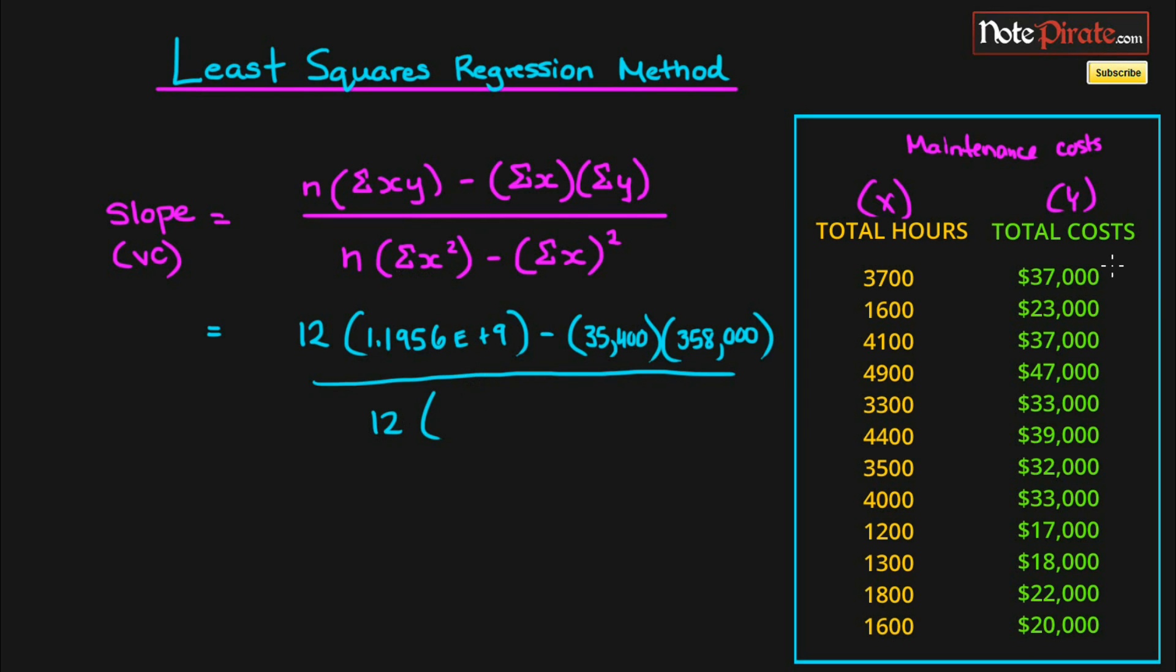Then we draw our division line and use 12 as the number again. This is the sum of x squared, so we're going to square the x term 3700, then add it to 1600 squared, add it to 4100 squared, and so on. We'll subtract the sum of x, which is 35,400, and then square that.